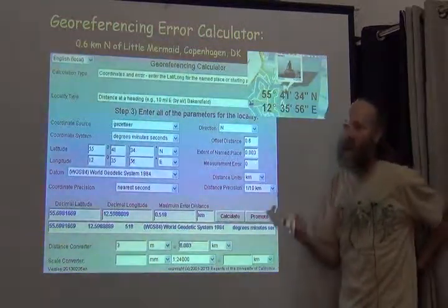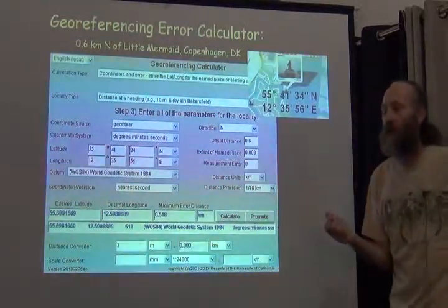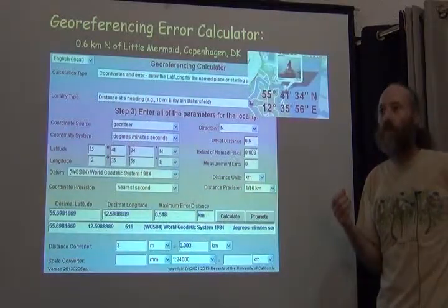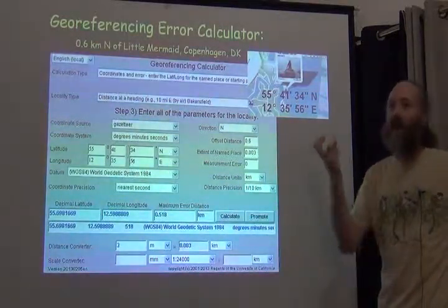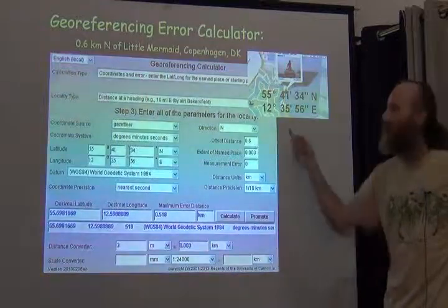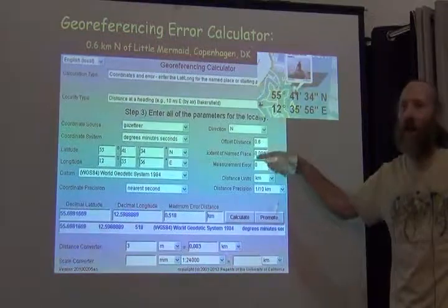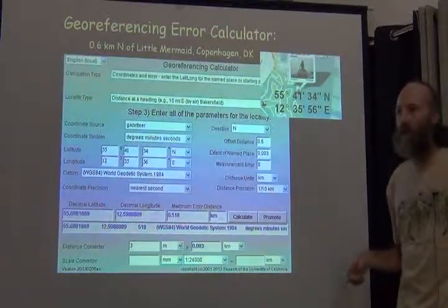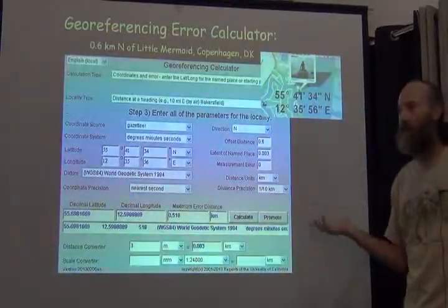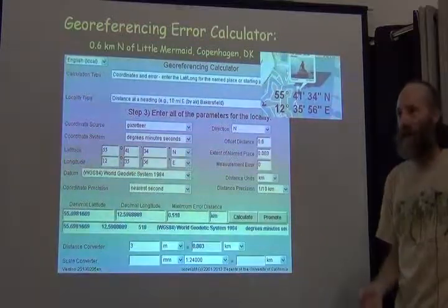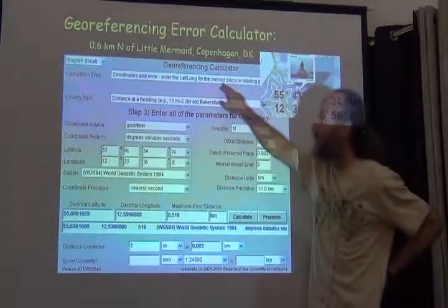There is another calculation type which is coordinates only, because sometimes when you do a georeference, you already have the coordinates of the named place and you only need to find the error. For example, if I have the locality of Accra, I can get a coordinate for Accra. I don't need the calculator to tell me that. What I need is the calculator to tell me how big should all of the uncertainty be given various pieces of information that I have. So that would be a different kind of calculation type, the error only calculation type.